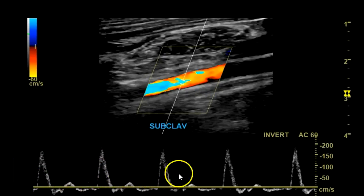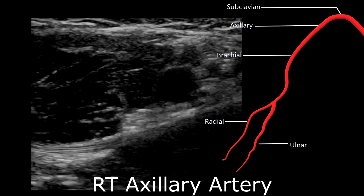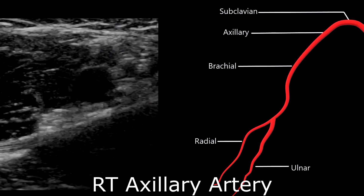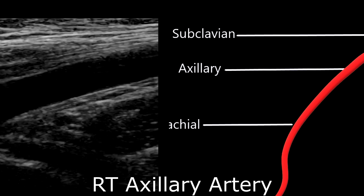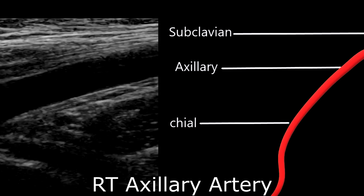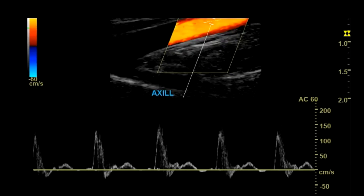Further down in the arm, the arteries may exhibit monophasic waveforms depending on the hemodynamic needs at rest. The lower extremity arteries are typically triphasic all the way down in a normal exam. Here you have the axillary artery — you want to take transverse images with and without color, longitudinal images with and without color. Here's the axillary artery with color, then with spectral Doppler.